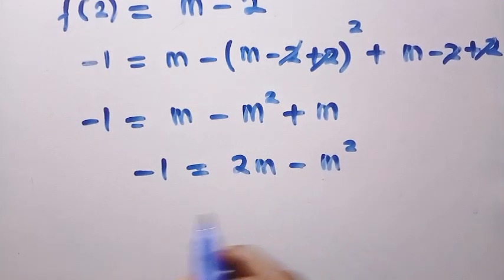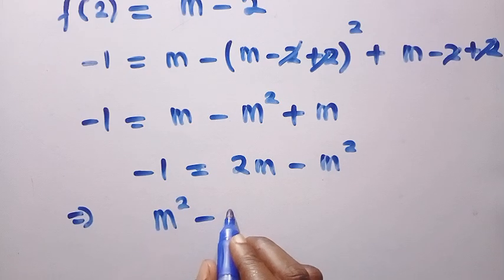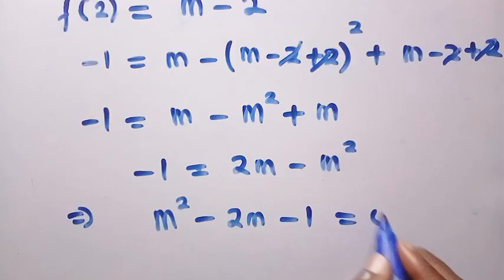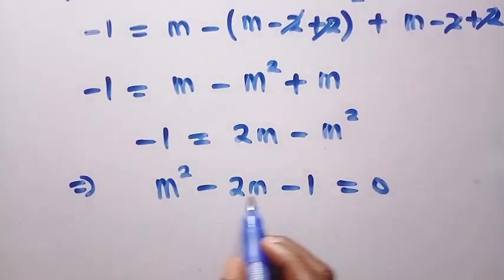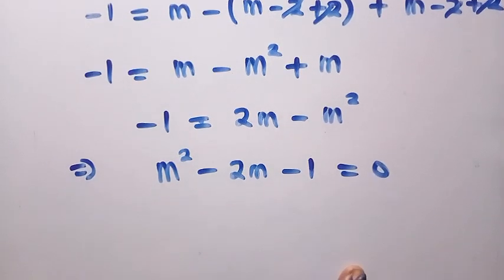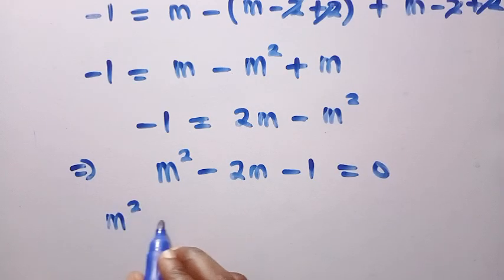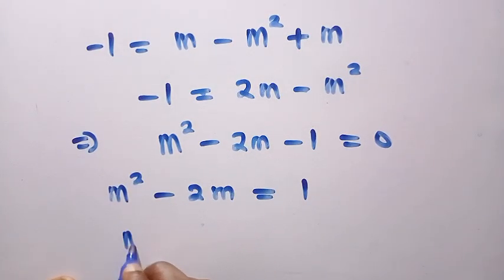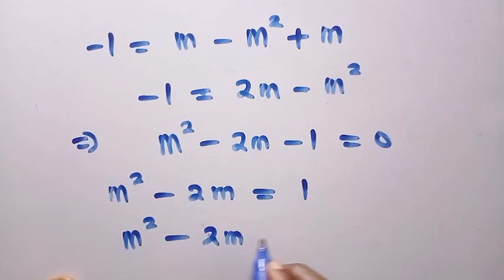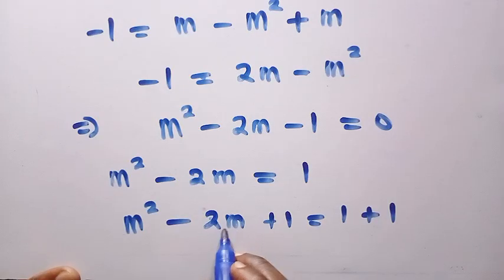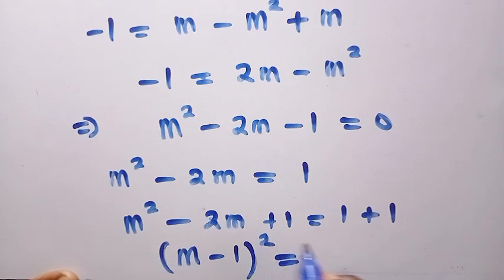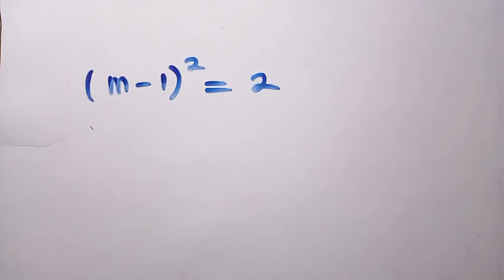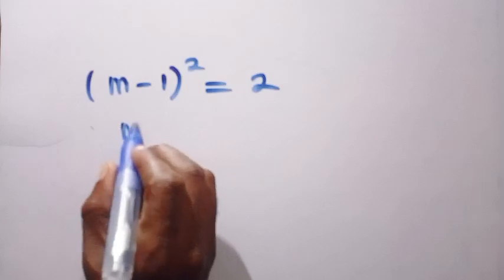By rearranging, we get the quadratic equation m² - 2m - 1 = 0. To solve this, we apply the completing the square method. First, transfer -1 to the other side: m² - 2m = 1. Then adding 1 to both sides: m² - 2m + 1 = 2, which gives us (m - 1)² = 2.